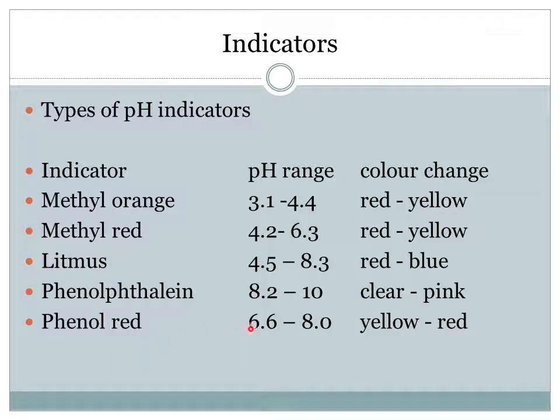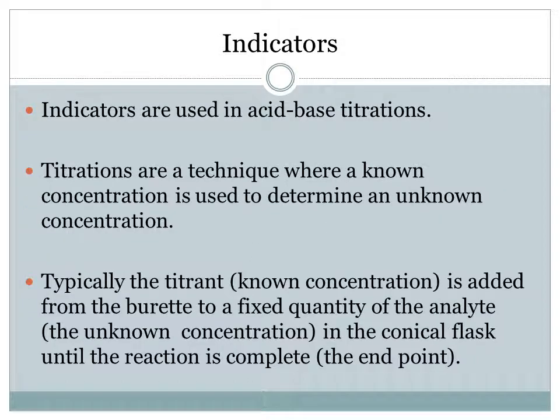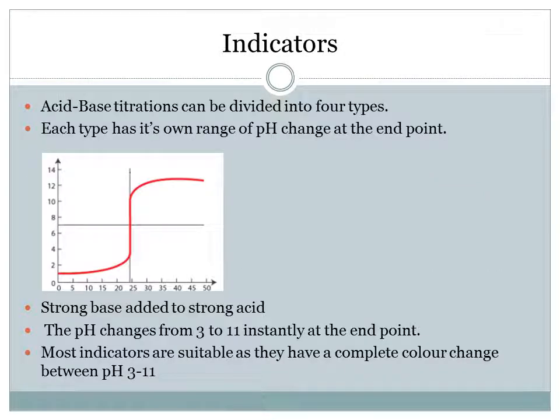Phenol red ranges from 6.6 to 8, going from yellow to red. Indicators are used in acid-base titrations. To remind you: a titration is a technique where a known concentration is used to determine an unknown concentration. Typically, the titrant — the known concentration — is added from the burette to a fixed quantity of analyte — the unknown concentration — in the conical flask, until the reaction is complete. This is called the endpoint, or in acid-base titrations, the equivalence point. You don't always have to have the titrant in the burette; you can switch them around.